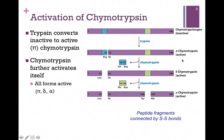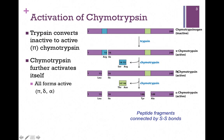At this point, chymotrypsin takes over the activation and auto-activates itself. In the first step, it's going to clip out a 2-amino acid dipeptide — serine and arginine, residues 14 and 15 — and that converts it from pi to delta chymotrypsin.